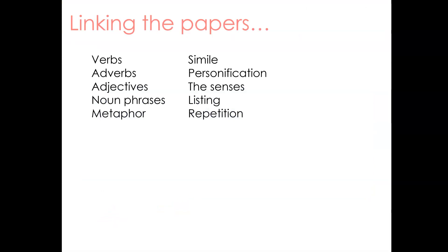We can link the papers further through the kinds of devices and methods that writers use. Having a good knowledge of language is important, so refreshing word classes and the difference between figurative language forms — such as metaphor, simile, and personification — is a really good revision strategy. You could talk about language features in both Paper 1 and Paper 2, such as verbs, adverbs, adjectives, and noun phrases. You could focus on metaphors, similes, personification — anything creating imagery within the text. Sensory details are useful to zoom in on, as are methods used for emphasis such as listing and repetition.